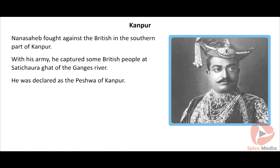British women and children were taken under Nana Sahib's custody and were later killed in the Bibighar Massacre. The British forces reached Kanpur on July 16, 1857 and set Nana Sahib's house on fire. Nana Sahib was proclaimed as Peshwa, but his succession was suspended by the British. He fled to Nepal and passed away in 1906.